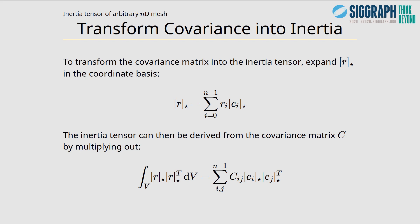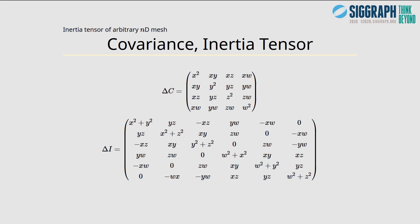A canonical simplex in n-dimensions has two terms of interest: a diagonal and off-diagonal term. Now that we have the covariance, we need to transform it into the inertia tensor. To do this we expand the r-star matrix into the coordinate basis, giving a simple relation between the r-star matrix and the covariance matrix. We can see this relationship here. We take the terms from the covariance matrix and sum them together and rearrange them to get the inertia tensor.